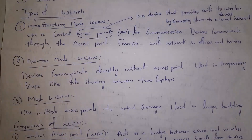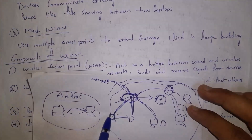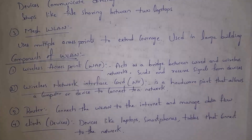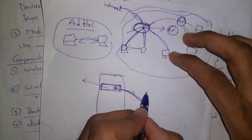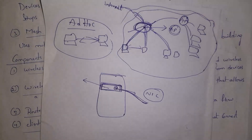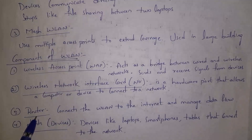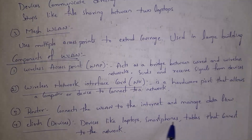Next I will explain components of WLAN. The first is a wireless access point, present in devices like routers and switches, through which all devices connect to the network. The second is the wireless network interface card (NIC), a hardware part that allows a device like a laptop to connect to the network wirelessly. Third is a router, used to connect to the network wirelessly. Fourth is clients — any device connected to a wireless network, such as laptops, smartphones, and tablets.